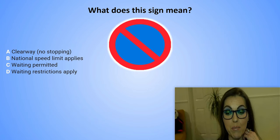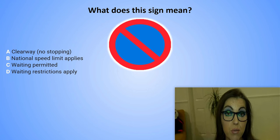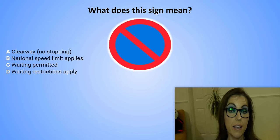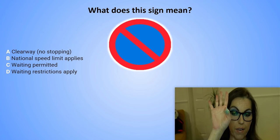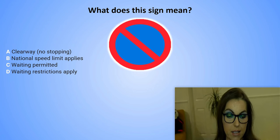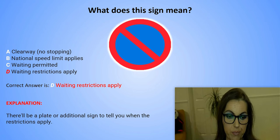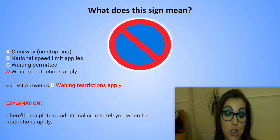What does this sign mean? A. Clearway, no stopping. B. National speed limit applies. C. Waiting permitted. D. Waiting restrictions apply. The correct answer is B. Waiting restrictions apply. Explanation: There will be a plate or additional sign to tell you when the restrictions apply.